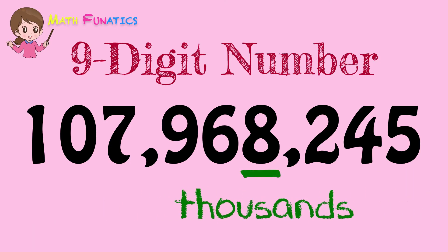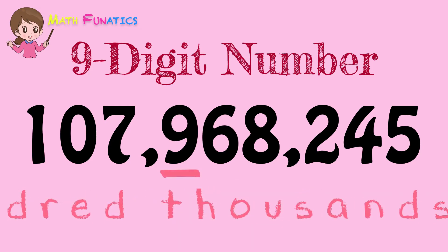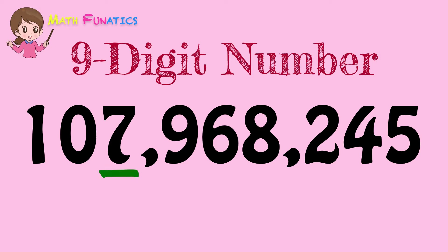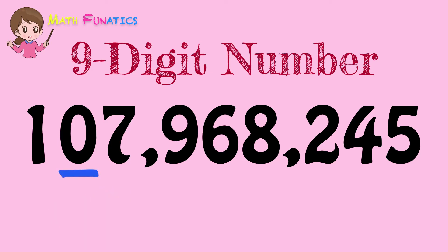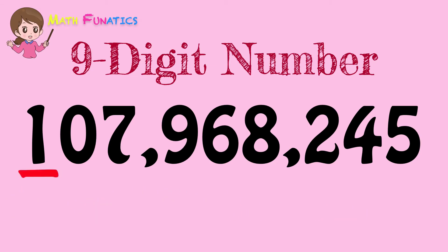Continuing from ones, tens, and hundreds, we have thousands, ten-thousands, hundred-thousands. The next digit, which is 7, is in the millions place. The next digit, which is 0, is in the ten-millions place.